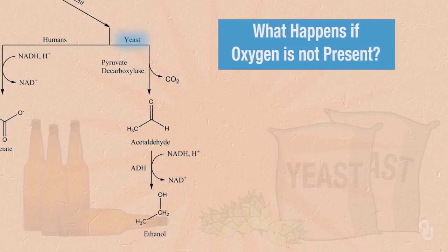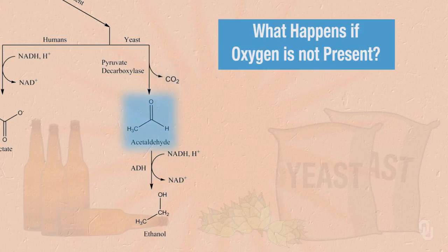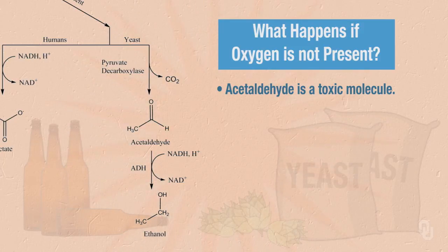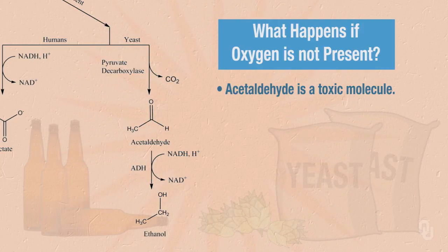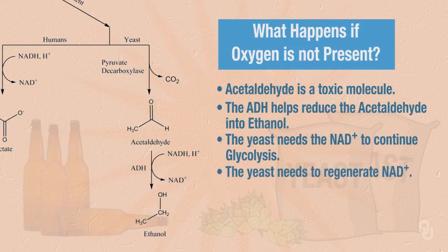In yeast, they have an enzyme called pyruvate decarboxylase, which we don't have. As the name implies, this enzyme catalyzes the decarboxylation of pyruvate to make acetaldehyde — a toxic molecule. So yeast don't want acetaldehyde levels to build up. The next reaction is catalyzed by ADH, alcohol dehydrogenase. This is the reverse of the reaction in alcohol metabolism — the acetaldehyde is reduced to ethanol, allowing NADH to be re-oxidized to NAD+, which is needed to continue running glycolysis.